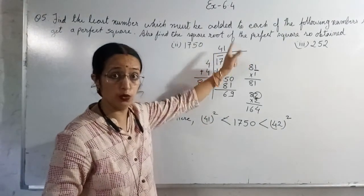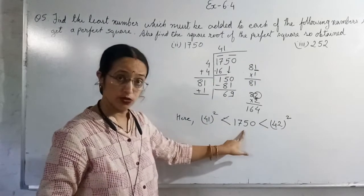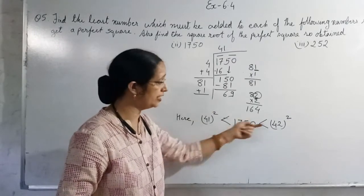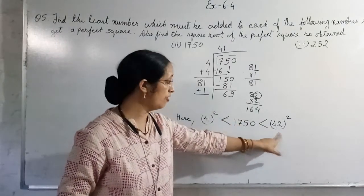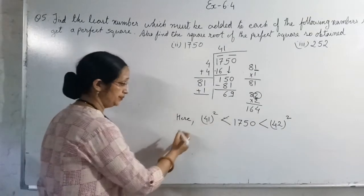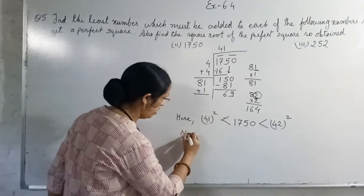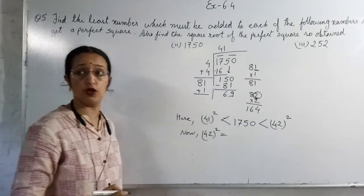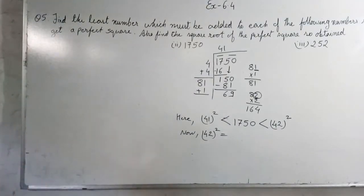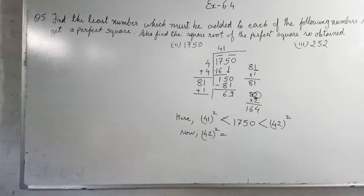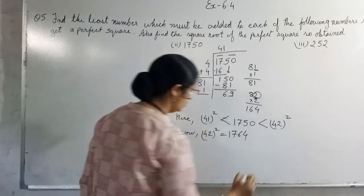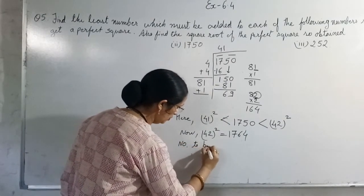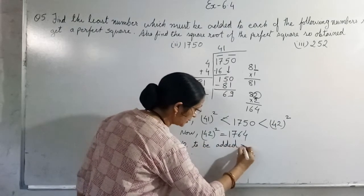To be next number, 41 ke baad mein kya aega? 42. You will always go to next number. That means we have to add some number so that it becomes the perfect square of 42. So 42 square is equal to kitna hoga? 42 ka square, if you don't know then find in rough column. It will be 1764.